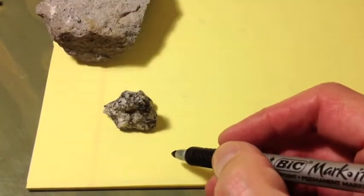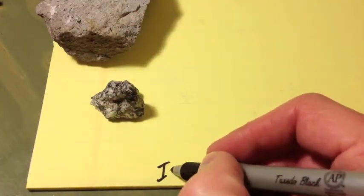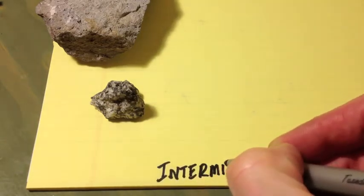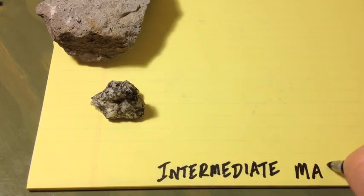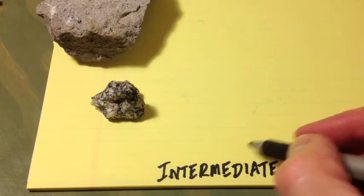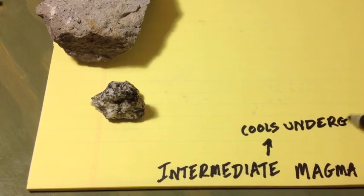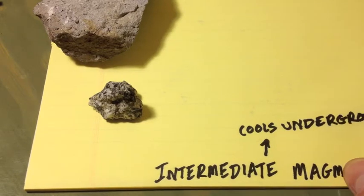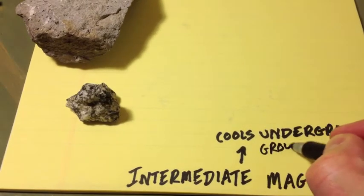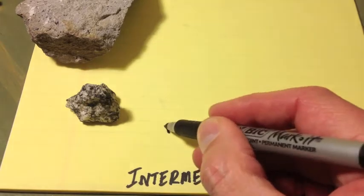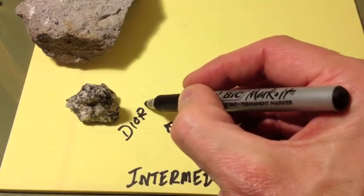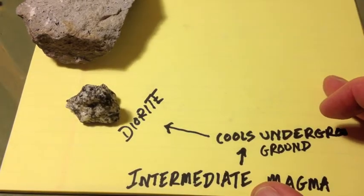Now, we'll go to the intermediate. Intermediate magma is middle silica. It's got some iron and a medium amount of silica. When it cools underground, it makes what we call diorite, a coarse-grained, medium-color overall igneous rock.